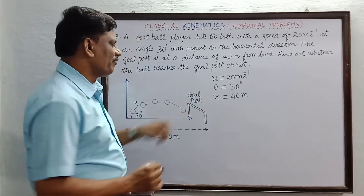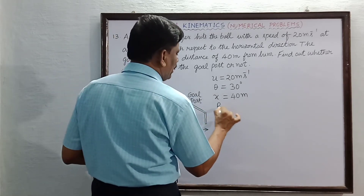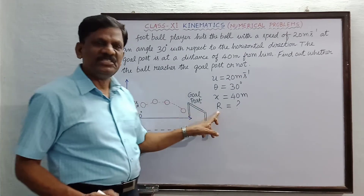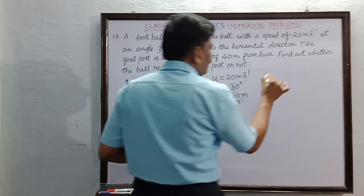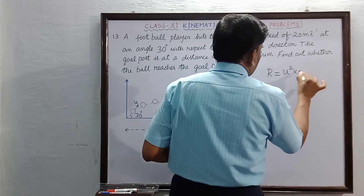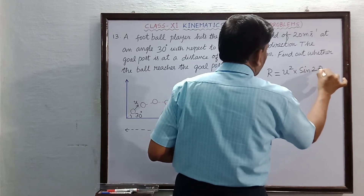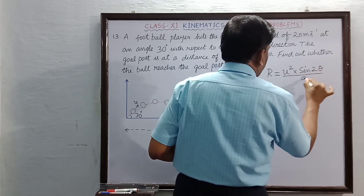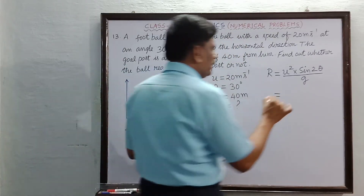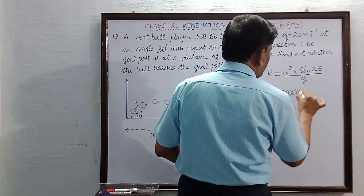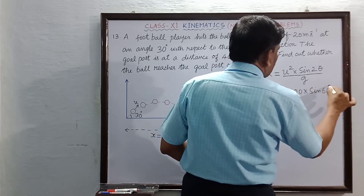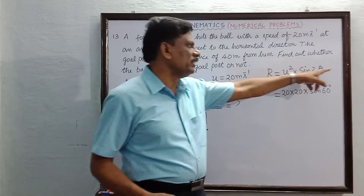We have to find the range. The formula for range is: R = u² × sin(2θ) / g. Here u² is 20 × 20, and since theta is 30 degrees, 2theta is 60 degrees, so we need sin(60°).